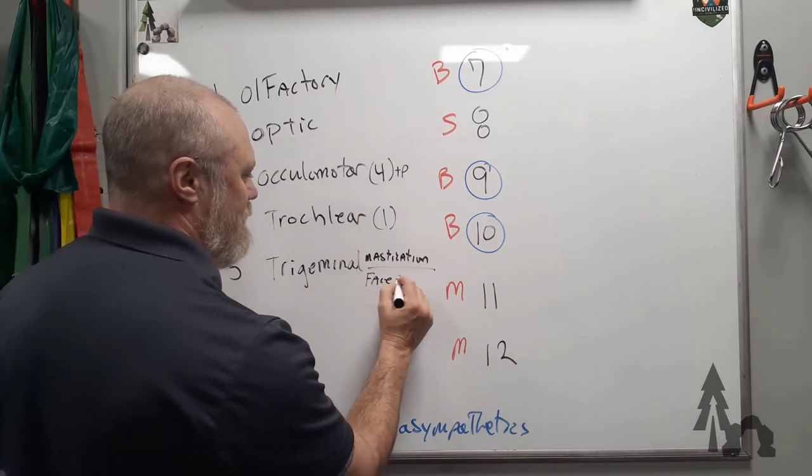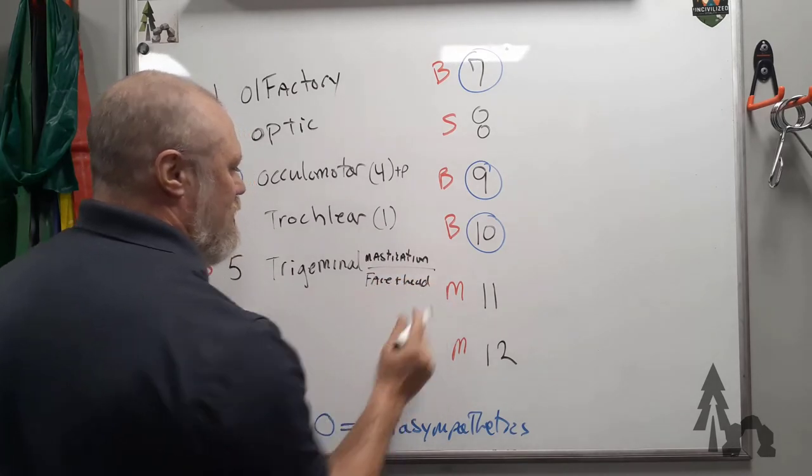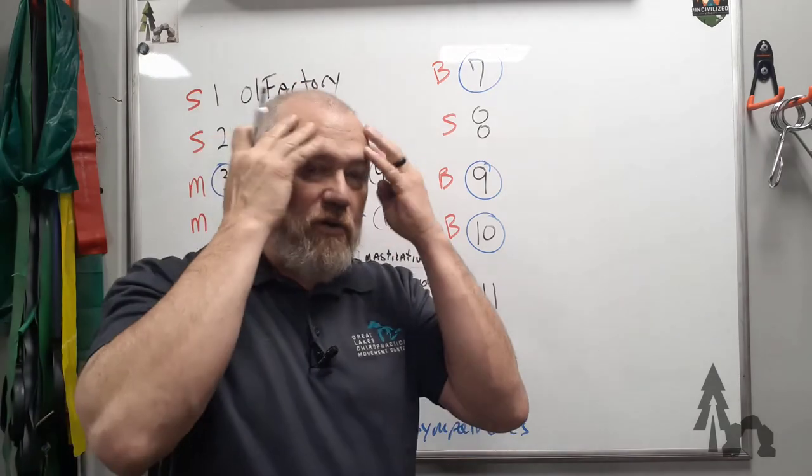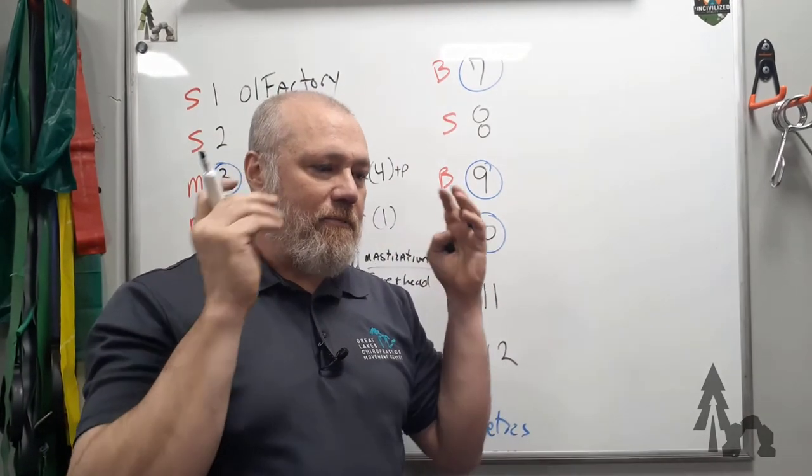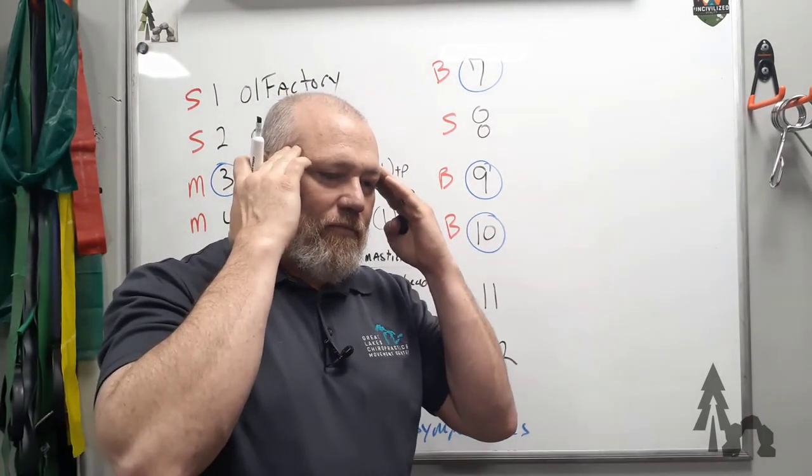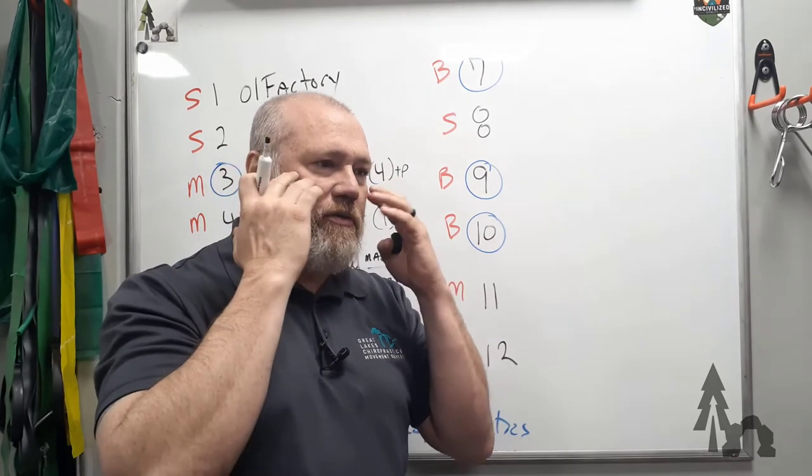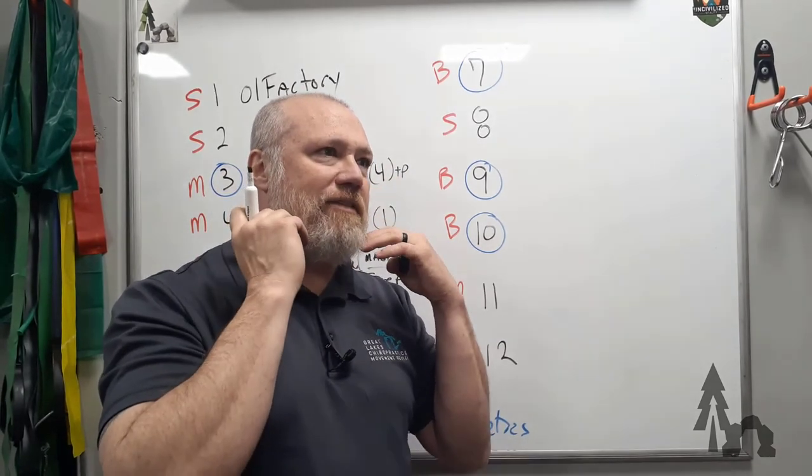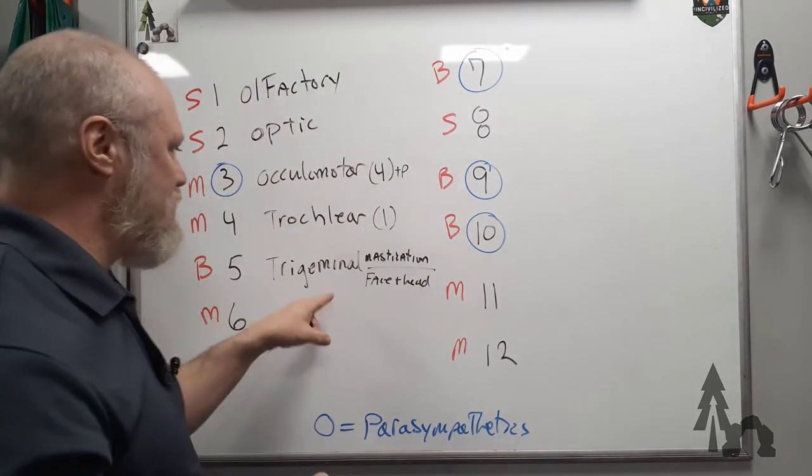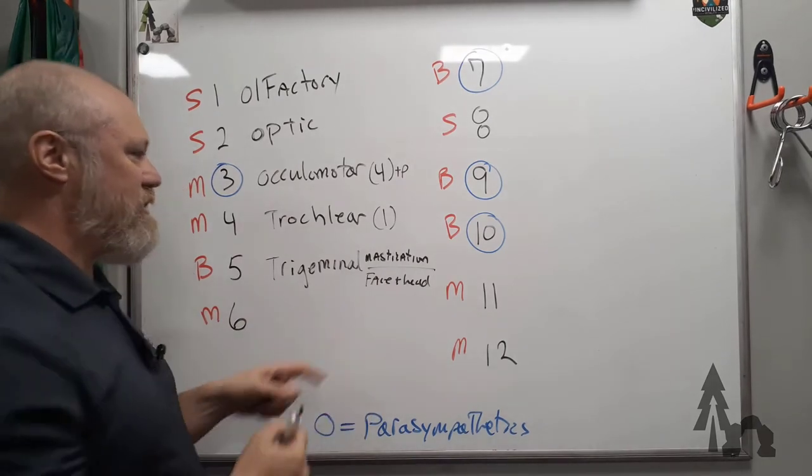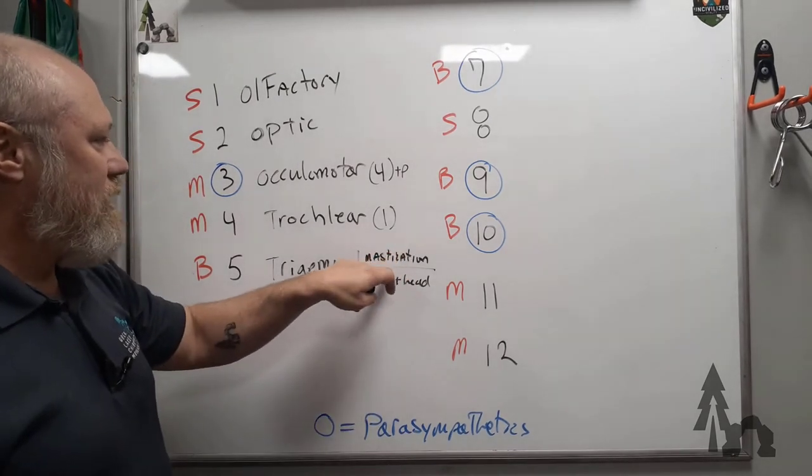And then sensory from your face and head—touching these three zones: the ophthalmic zone, the maxillary, and the mandibular zone. So the trigeminal divides your face into kind of three areas of sensation and it powers the muscles you chew with.